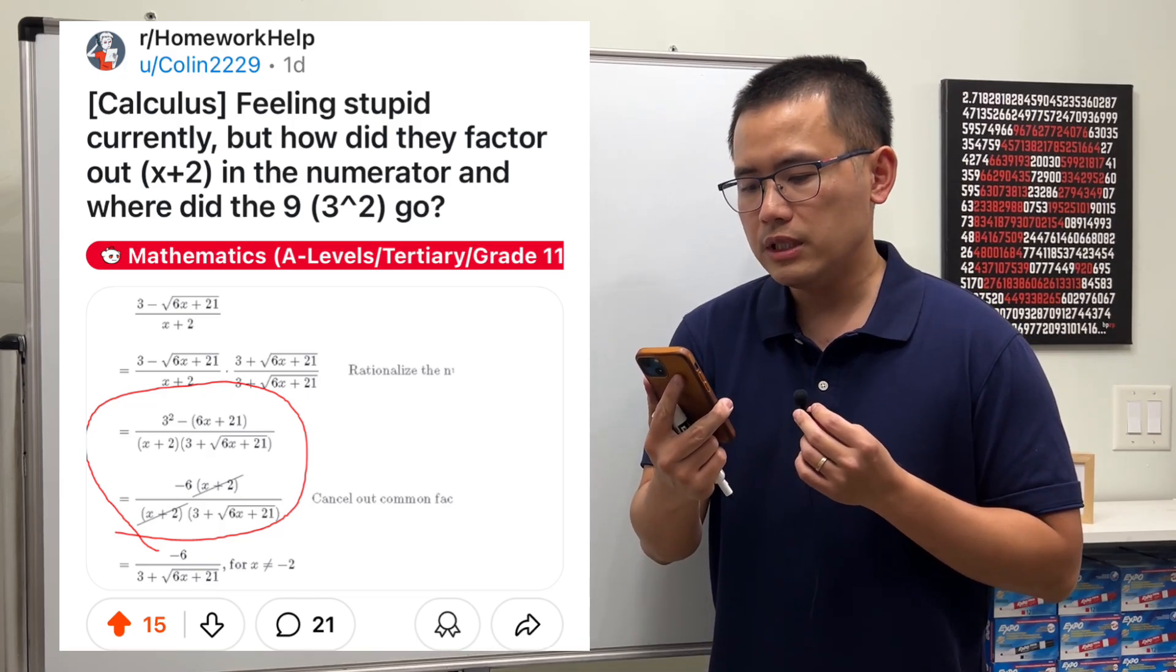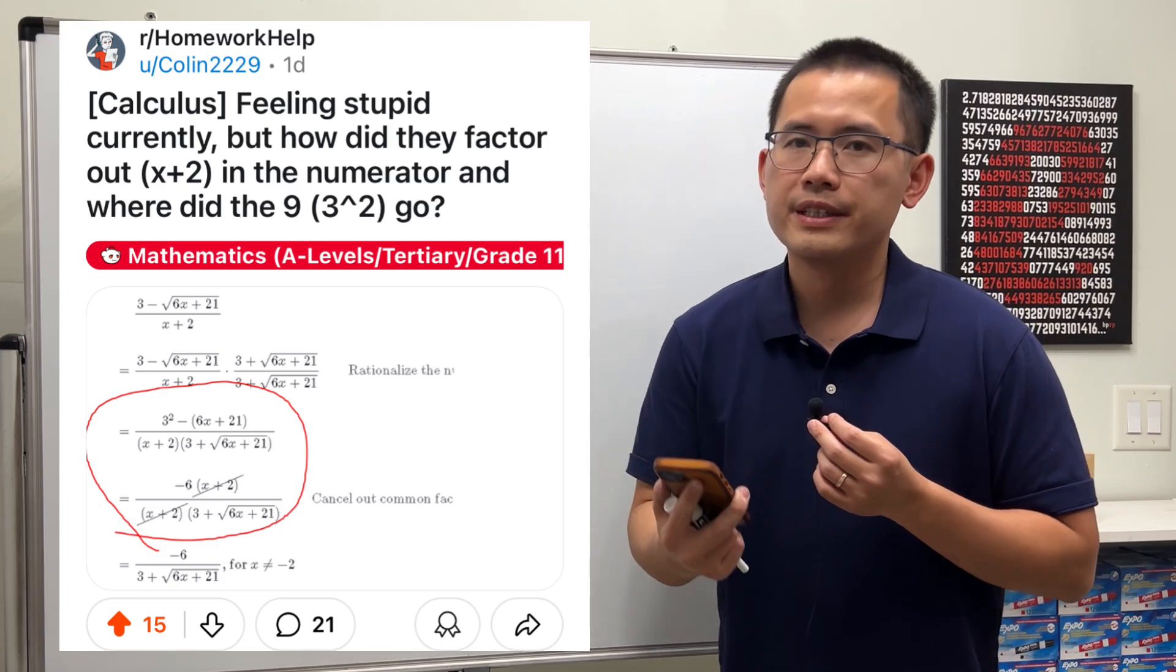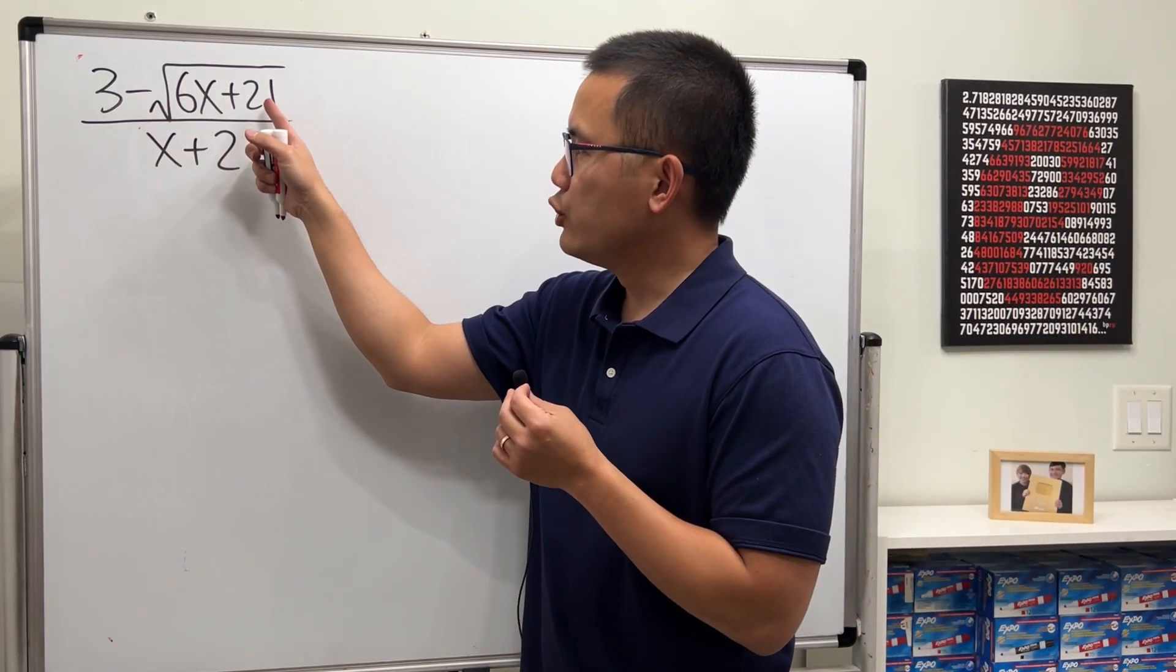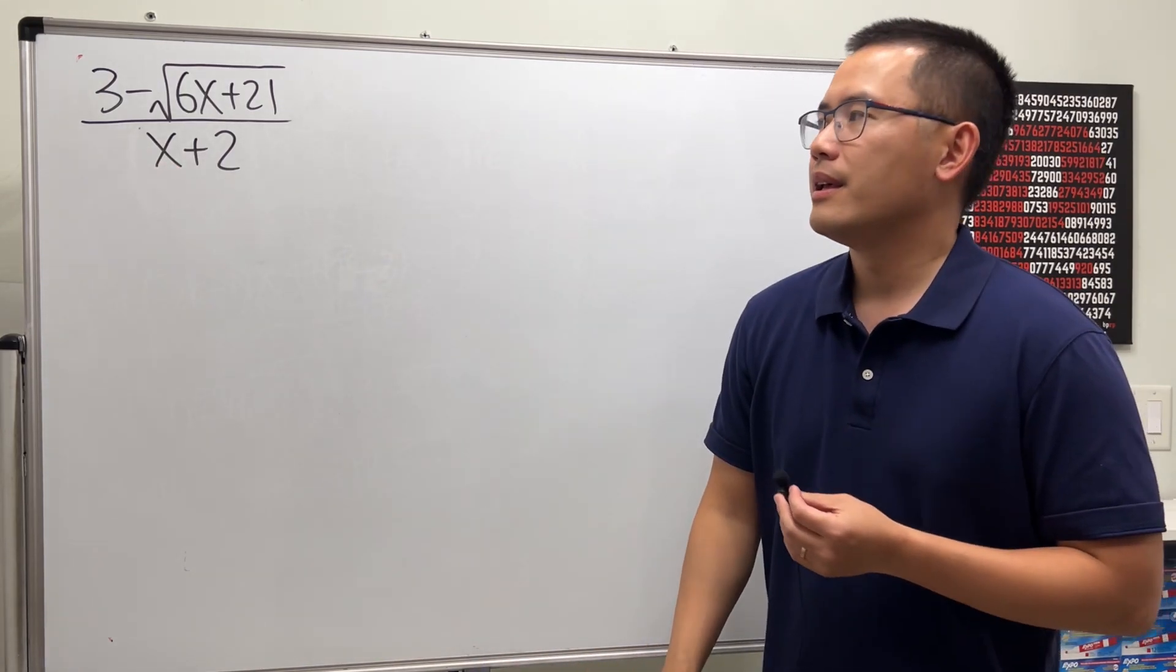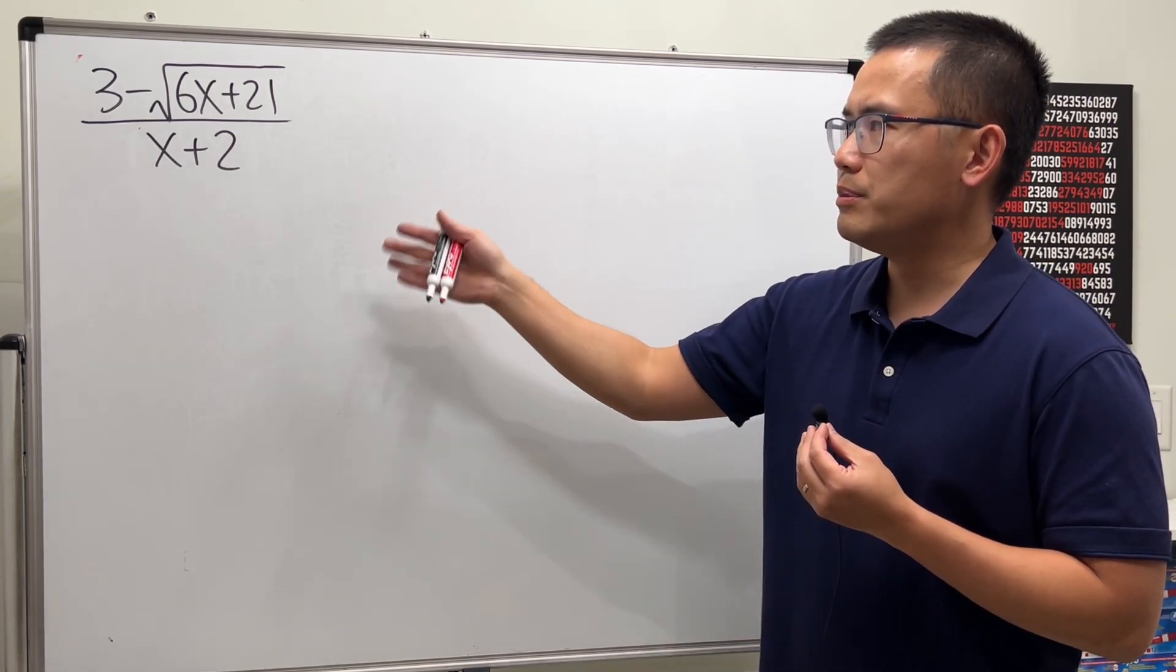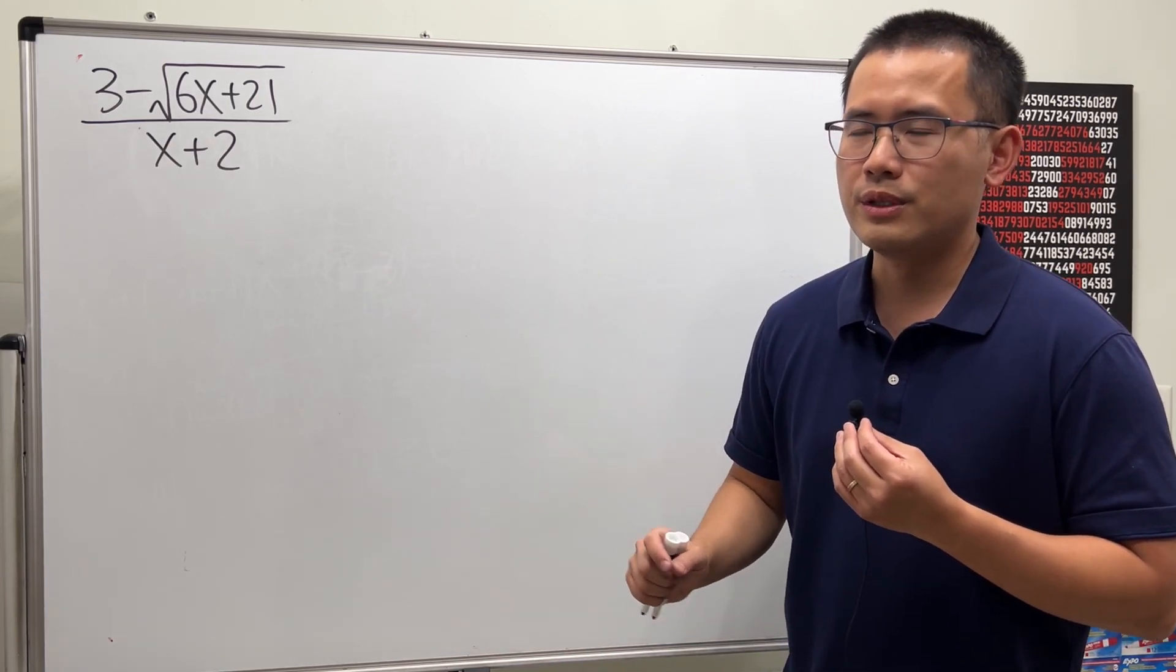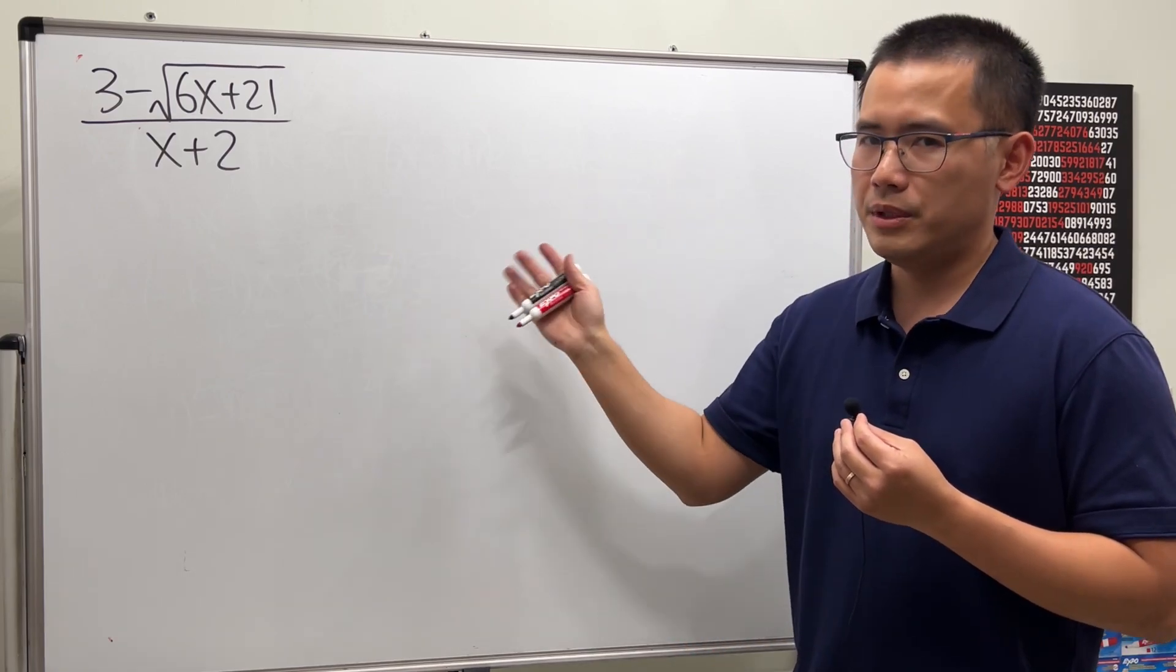Feeling stupid currently, but how did they factor out x plus 2 in the numerator and where did the nine go? Okay, let's take a look here. We are going to rationalize the numerator and then later on we will see the x plus 2 will be gone. This kind of question is usually done in pre-calc or in the beginning of calc one where you have to do limits or derivatives. Don't feel stupid because a lot of students struggle with this kind of algebra work, but don't worry, let me take care of this right here for you.